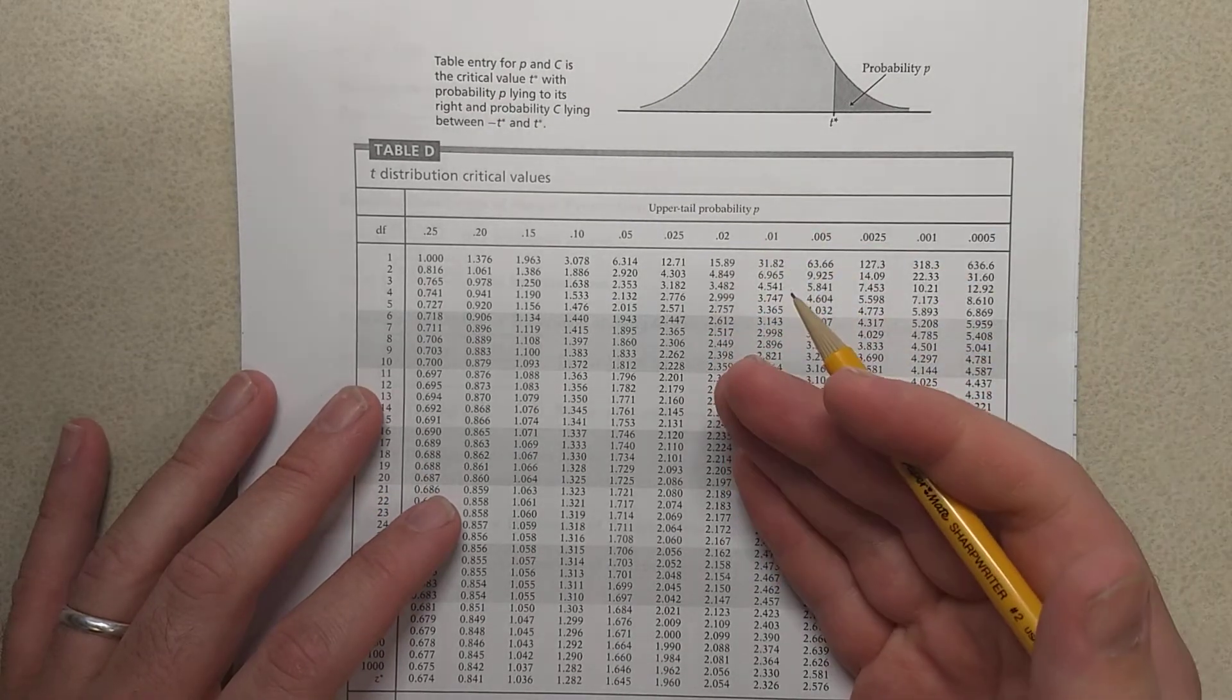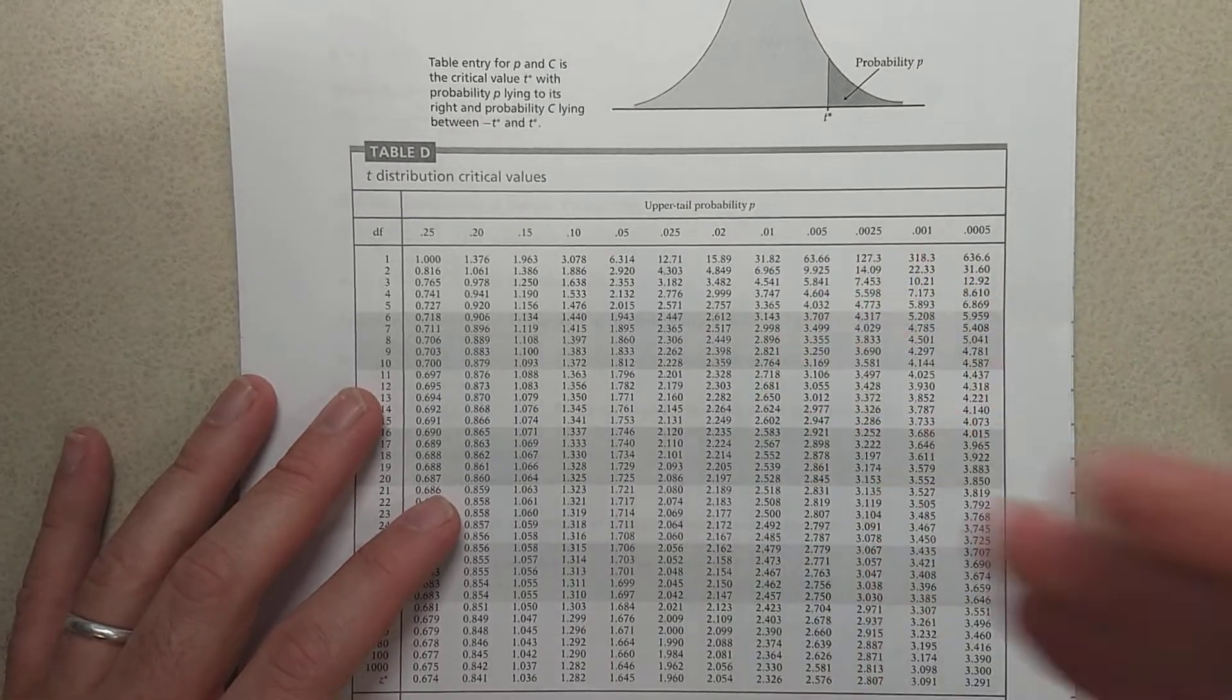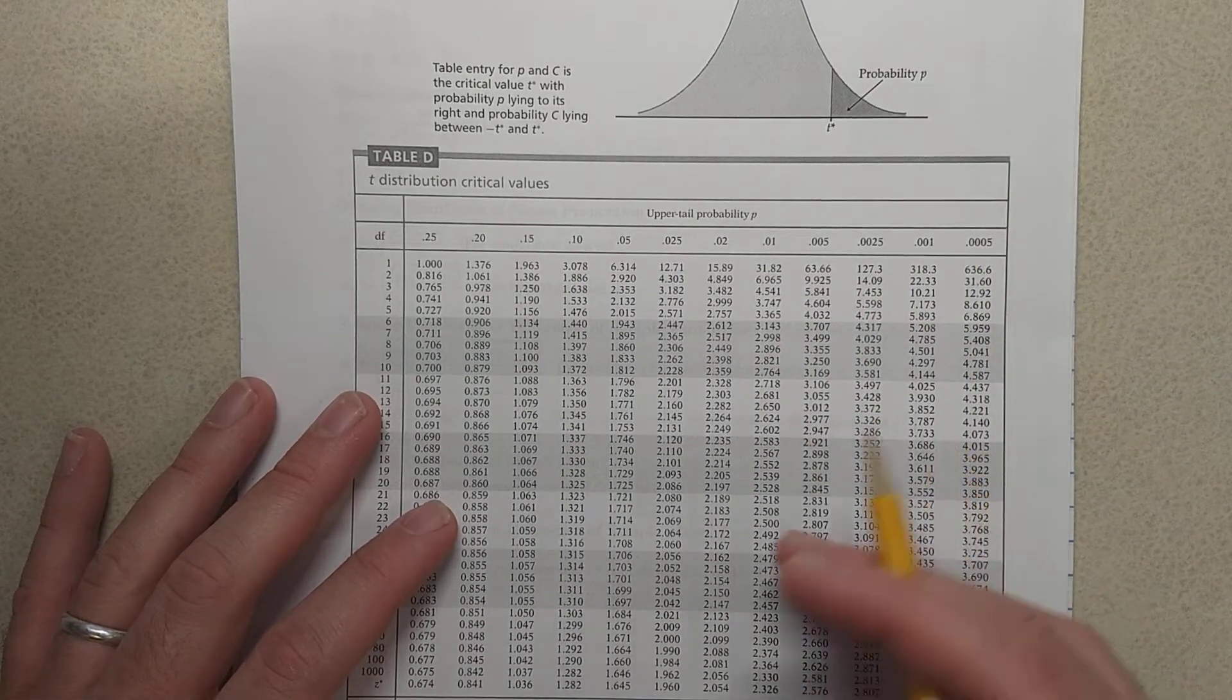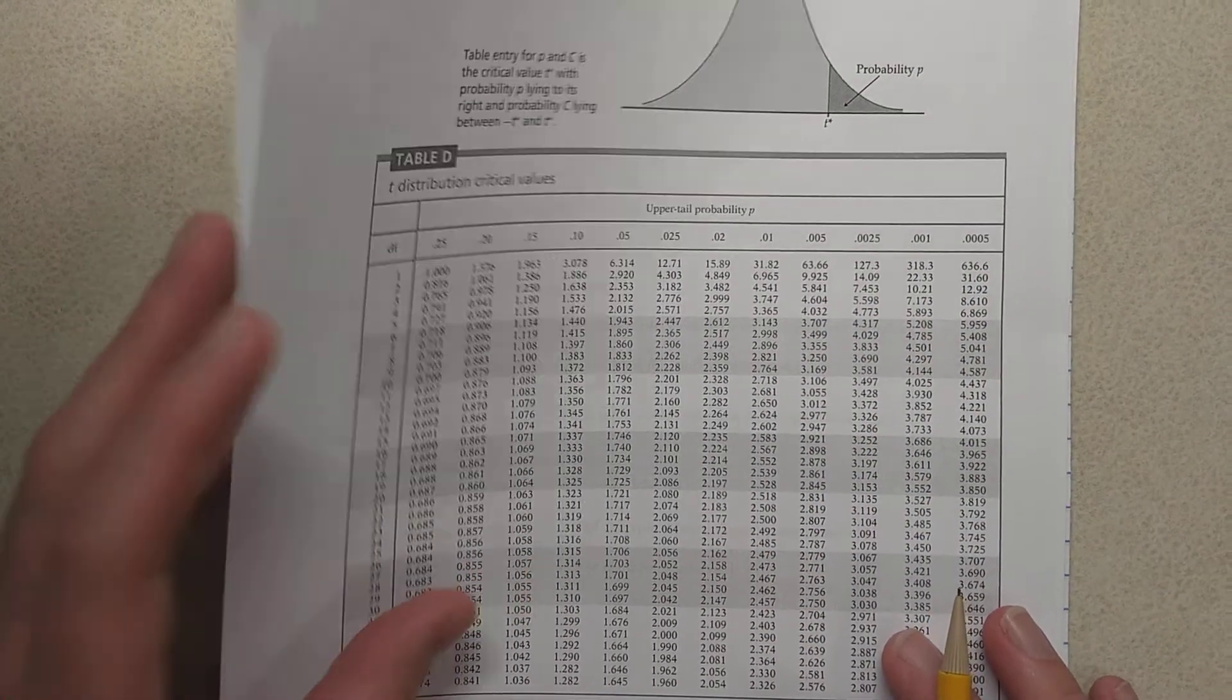You can use a cutoff, if the t-score is beyond this, then okay, reject the null hypothesis. But sometimes it's nice to see an actual p-value.